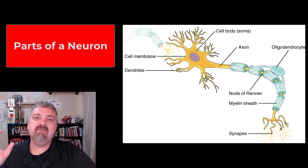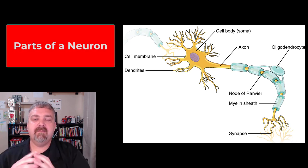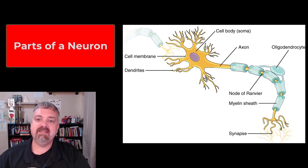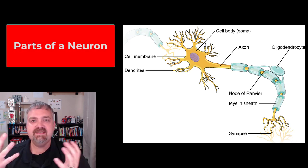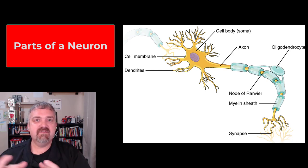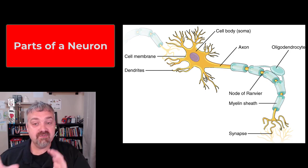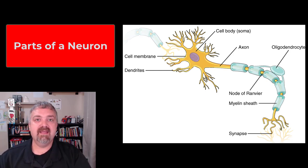Hey everybody, Dr. O here. In this video we're just going to cover the basic structure of a typical neuron. Whenever you see a drawing or an image of a typical neuron, it's usually a multipolar neuron like this.